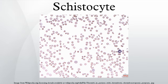Schistocytes are fragmented red blood cells that can take on different shapes. They can be found as triangular, helmet-shaped, or comma-shaped with pointed edges. Schistocytes are most often found to be microcytic with no area of central pallor.